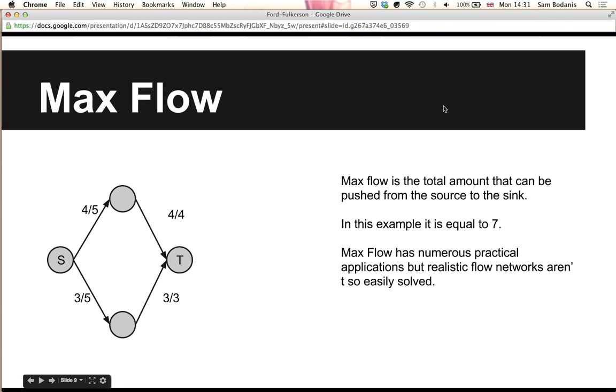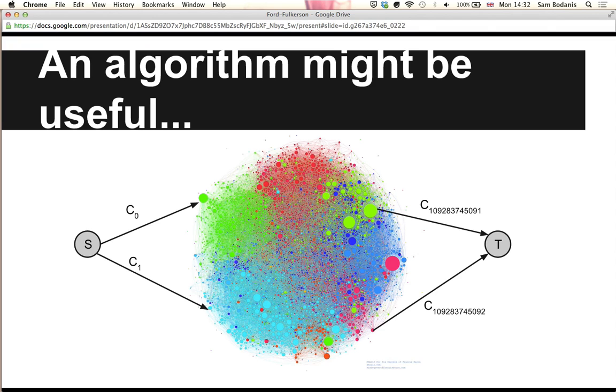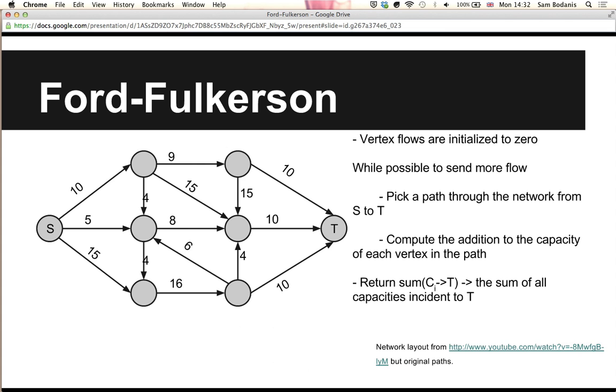Determining the maximum flow through a network becomes significantly more difficult as the size and complexity of the network increases. Many networks in practical applications have on the order of millions of vertices, so we need a more general method. Thankfully the Ford-Fulkerson method comes to our rescue.